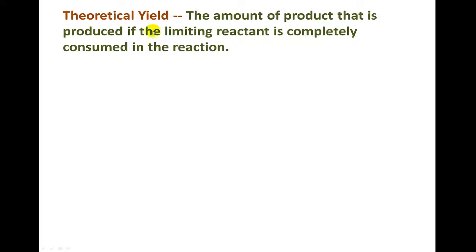So that brings us to the theoretical yield. Let's go ahead and define that. This is the amount of product that is produced if the limiting reactant is completely consumed in that chemical reaction. Those are the calculations we've been doing. When we use our balanced chemical equation and the amounts of reactants to determine how much product is produced, we are calculating the theoretical yield. And again, that's assuming that all of our limiting reactant is consumed in that reaction.